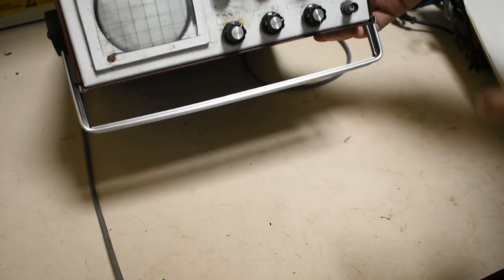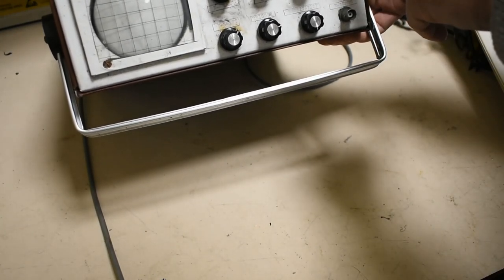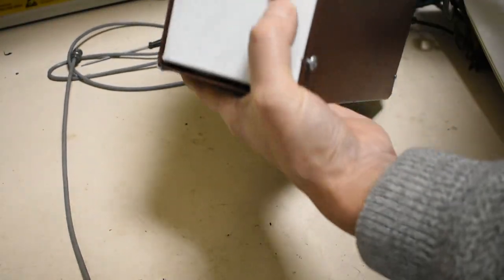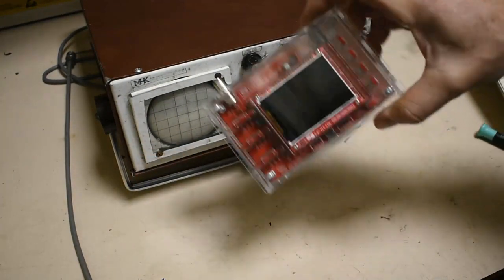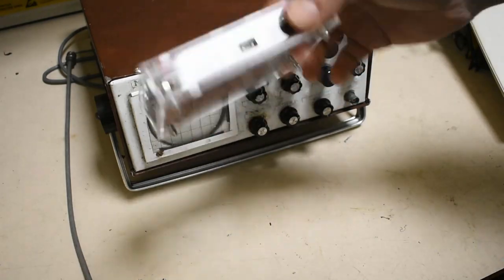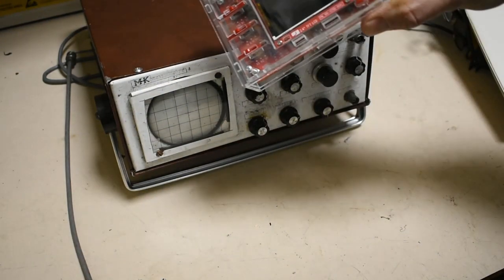So we have different inputs in here. There's one single channel. We've got the X input as well and we also have a Z input actually on this. So it has a few bits and pieces. It's not as good as anything like these days. You can pick up these for very little money digital storage oscilloscope single channel. They don't do Lissajous figures though.